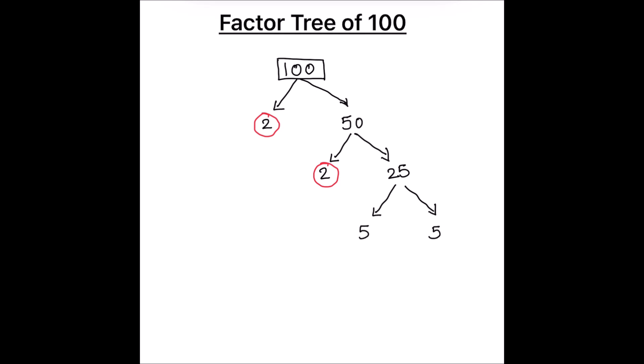Now we see that five is a prime number and it cannot be broken down further. When we get a prime number, we are going to circle it. Now all the numbers in the lower levels are prime numbers, and we cannot break these numbers into further factors, so we stop here.